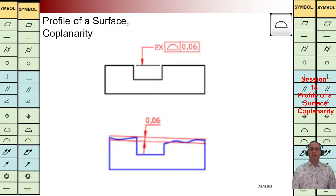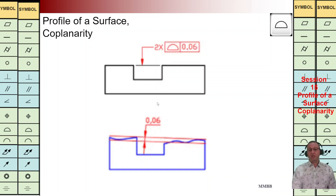Hello everybody, good to see you today. We're going to talk about co-planarity. We are going to control these two surfaces at the same time, then we are going to use this symbol and write 2× — meaning we are going to make a mid-plane for these two surfaces. Based on that, we are going to define two parallel surfaces to that mid-plane with this tolerance zone of 0.06, and these two wavy surfaces should be within that tolerance zone.